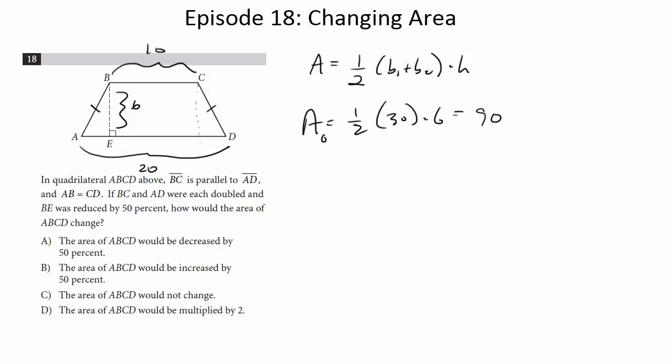Next, let's change the dimensions as instructed. So we're going to double BC and AD. So now it's going to be 40 and 20. And we're going to reduce BE, the height, by half. So it's going to be 3. So let's figure out what the new area of this trapezoid is going to be. So it's going to be one-half, 40 plus 20 is 60, times 3. So again, we get 90.